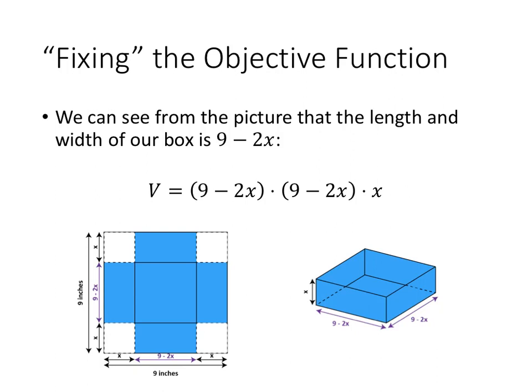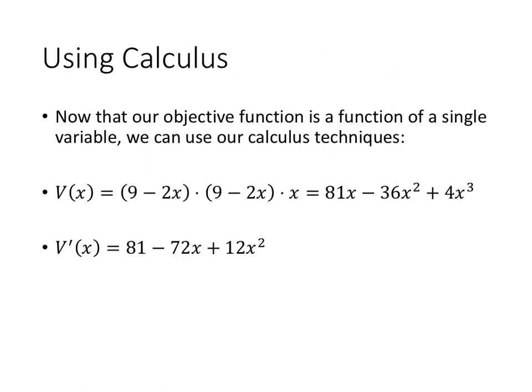So that means the volume is length times width times height, but now we realize that it's 9 minus 2x times 9 minus 2x times x. And now we have our objective function. And now that we have a function with only one variable, we can use calculus. We can multiply that out to get 81x minus 36x squared plus 4x cubed, take a derivative of that, and now we'll set it equal to 0.